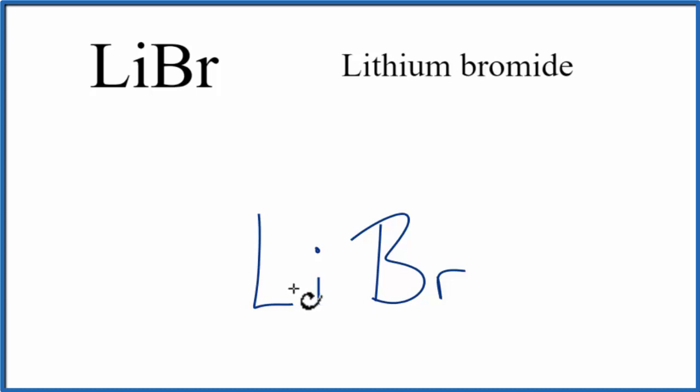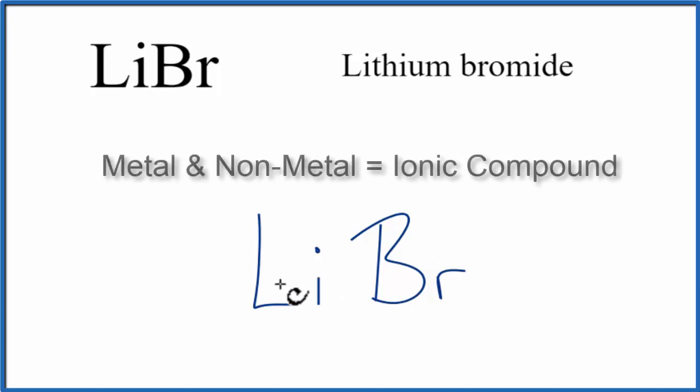Lithium is in group 1 on the periodic table, that's a metal, and bromine is in group 17, 7a, that's a non-metal. So when we have a metal and a non-metal, we have an ionic compound.